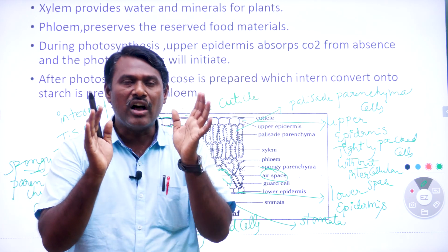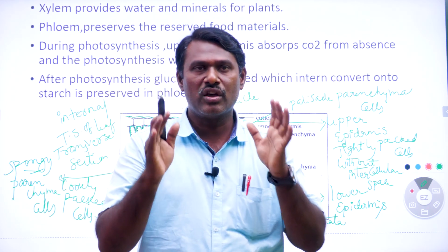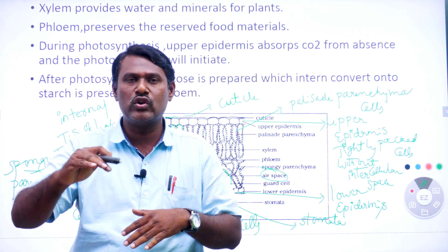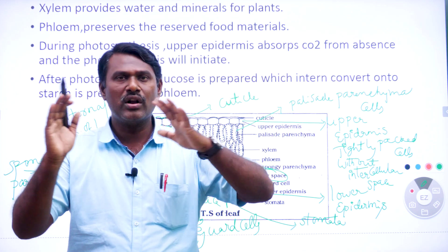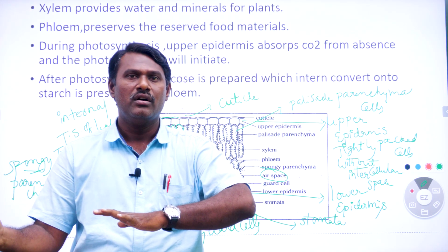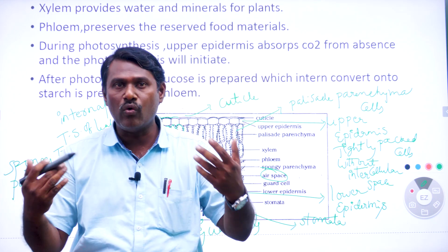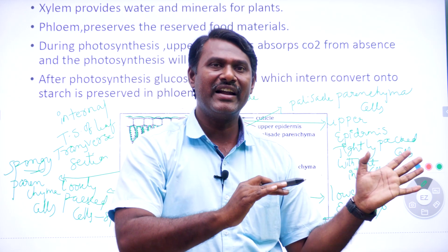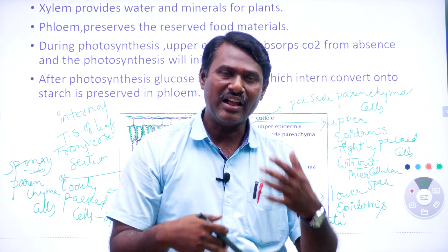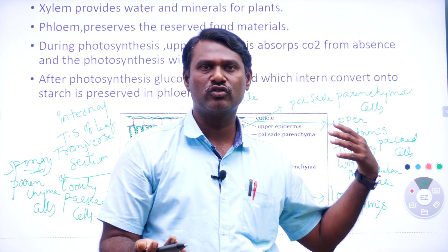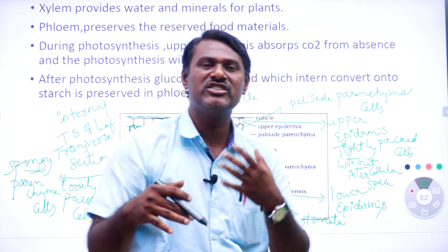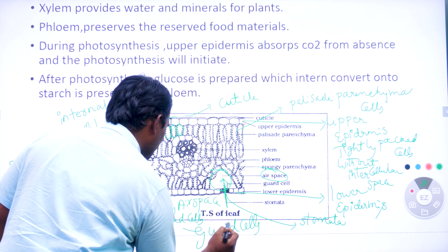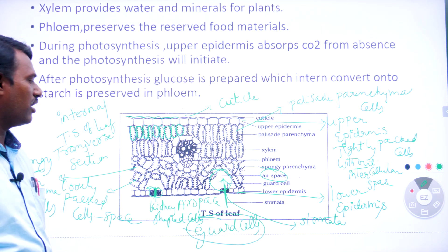One more function of stomata is transpiration. If any excess water is present in the leaf, that excess water is eliminated to the outside in the form of water vapour. Removal of excess water from inside to outside of the leaf, and intake of water when there is none inside — that is called transpiration. The opening and closing of stomata is influenced by these kidney-shaped guard cells.